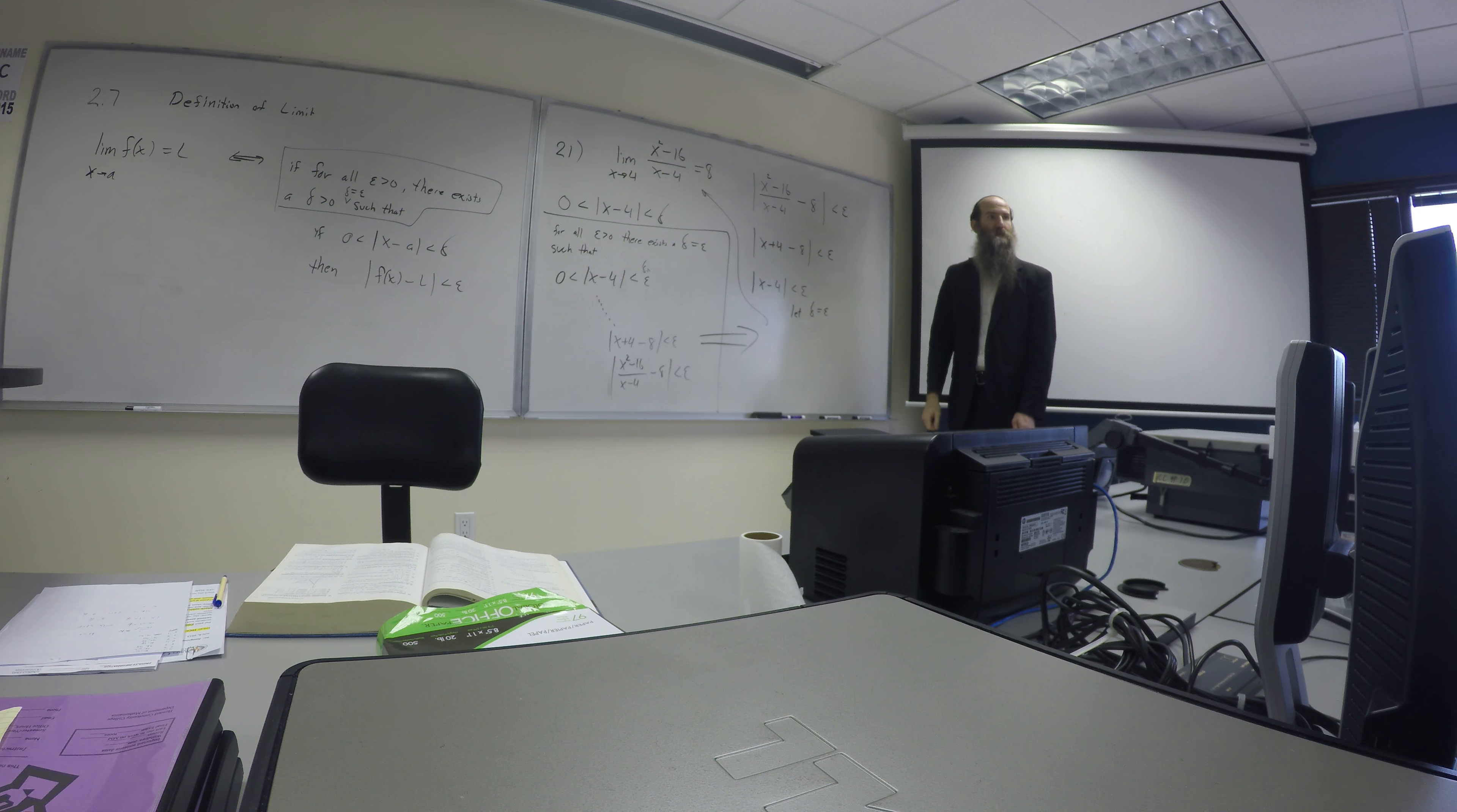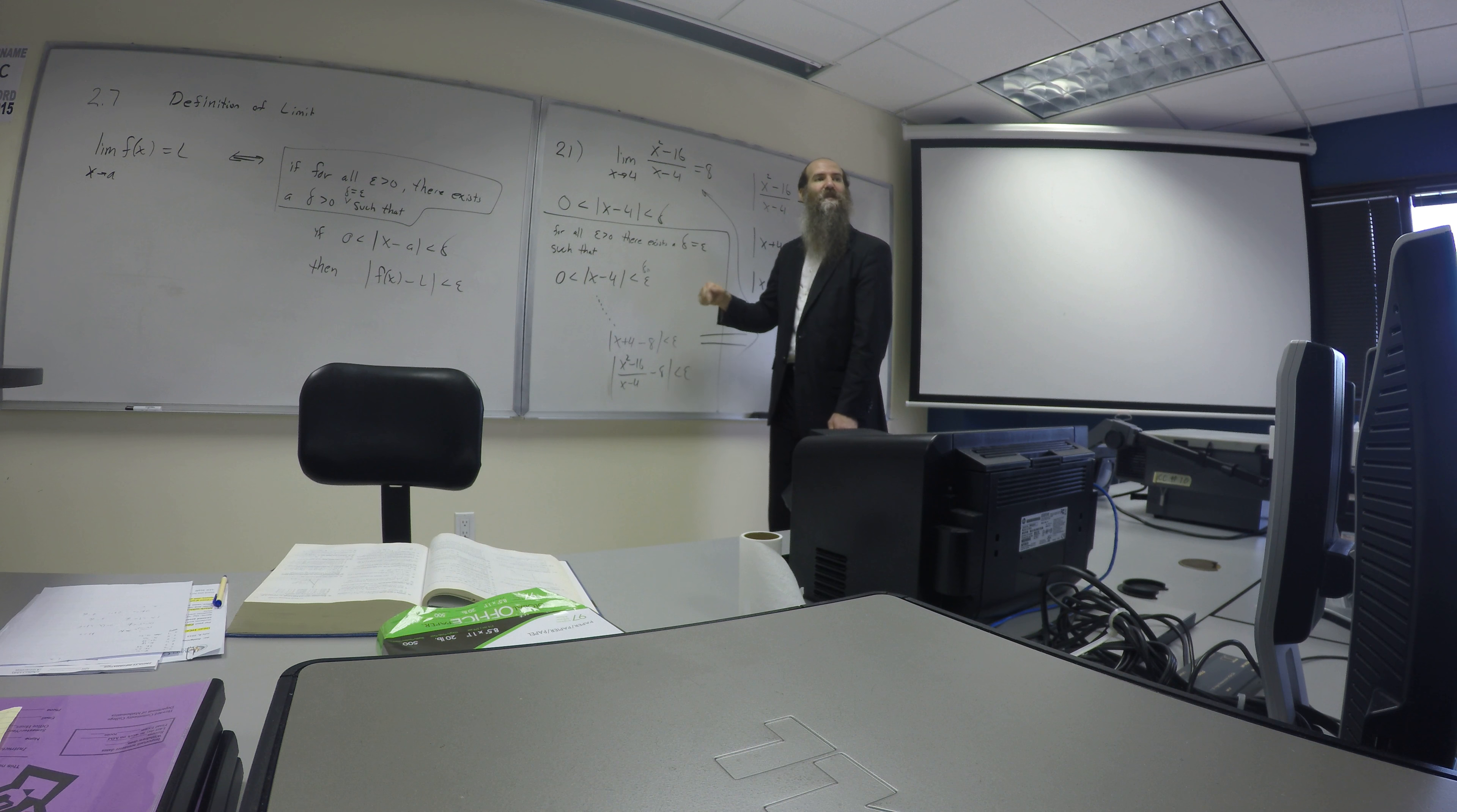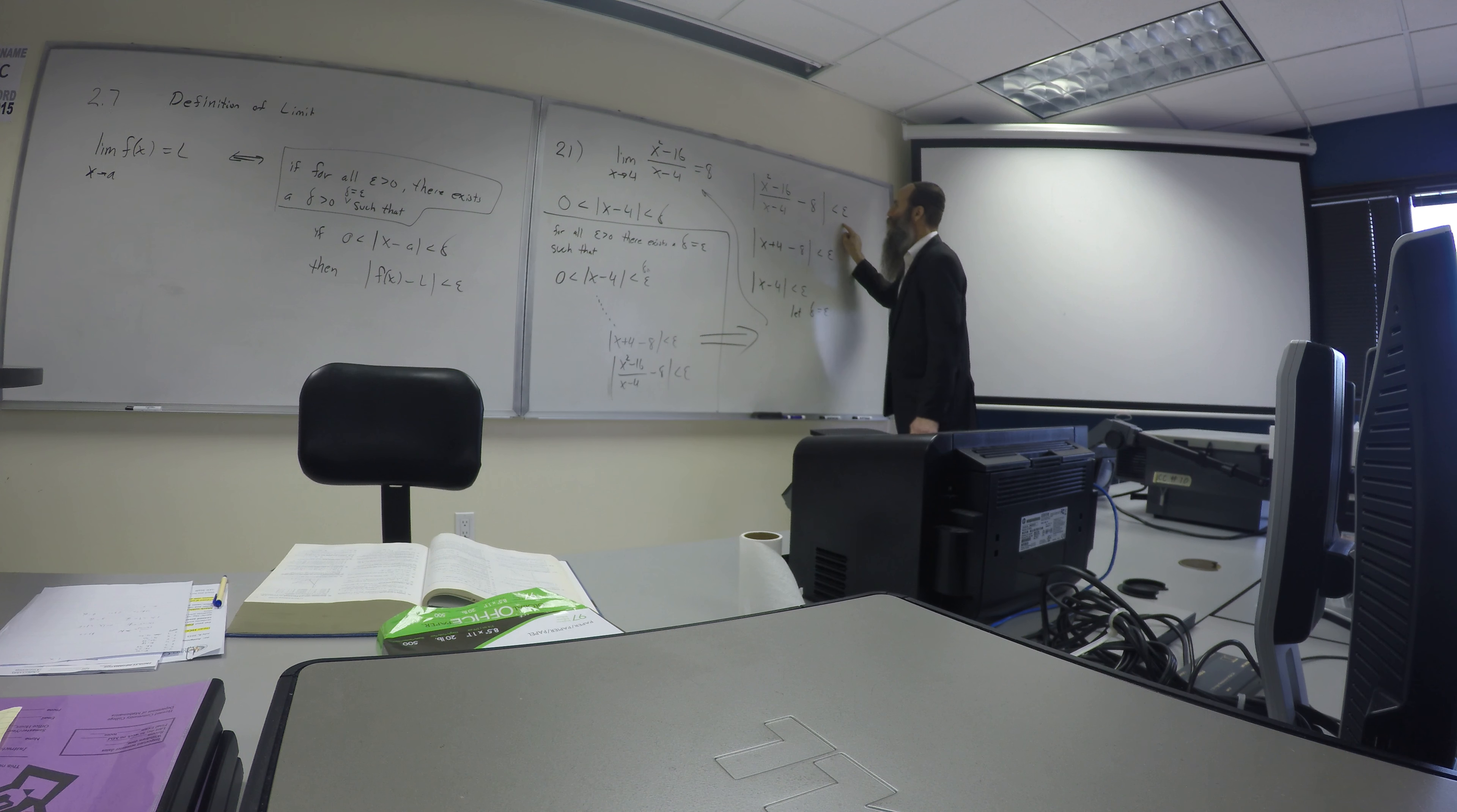You're not getting a solidified number as you're answering this. That's right, because you need delta to change as epsilon changes. You need this proof to work for any number whatsoever. That is, no matter how close, no matter how close you want your function to be to 8, because you're talking about a limit. You're talking about arbitrarily close to this number, right? This function has to be able to get arbitrarily close to this number. What's going to make that happen?